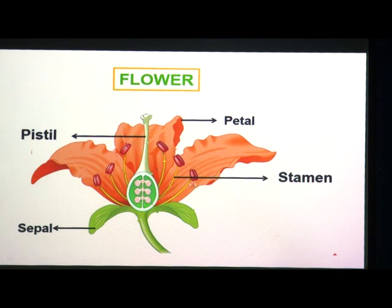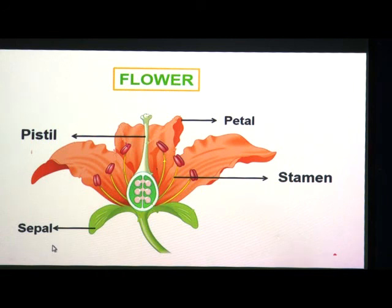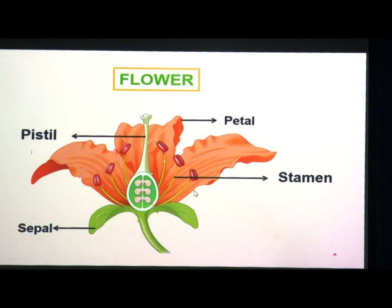The main parts of the flower are sepals, petals, stamen, and pistil. Sepals are green leaf-like parts in the outermost circle. Petals are usually bright coloured and attract insects for pollination. Stamen is the male reproductive part and consists of a filament and an anther. Each anther lobe has two pollen sacs filled with pollen grains — fine dust-like particles that contain the male reproductive material.